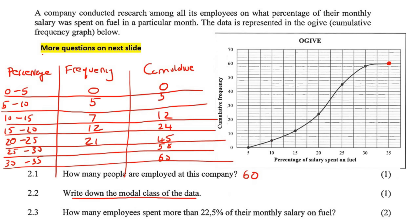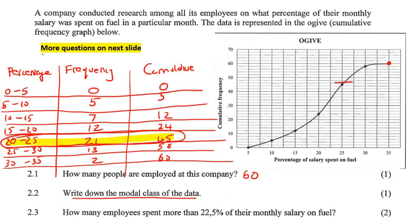And then 45 plus 13 gives the next value, and then 58 plus 2 gives 60. So where do we find the most people? The most people is in the 20 to 25 category. We can also see that that's the largest gap on the ogive — there's a big vertical distance there compared to the smaller gaps for other intervals. So the modal class is 20 to 25.